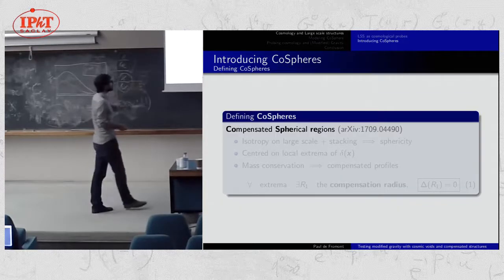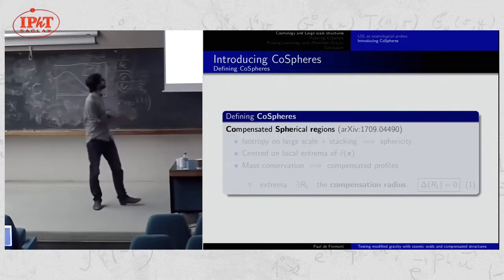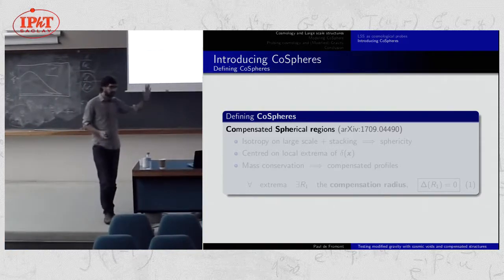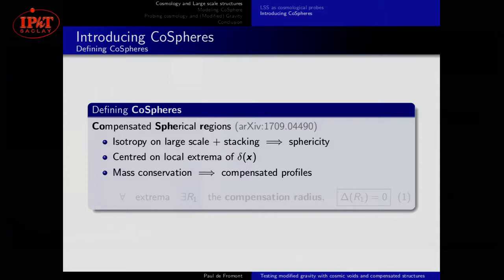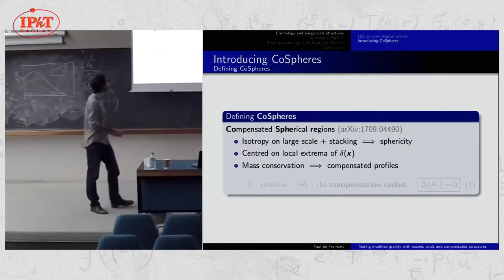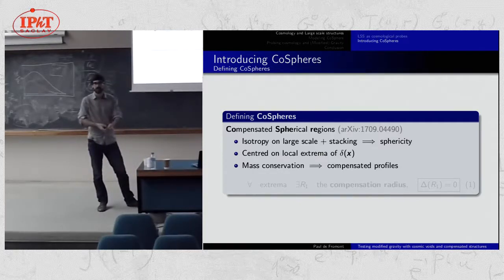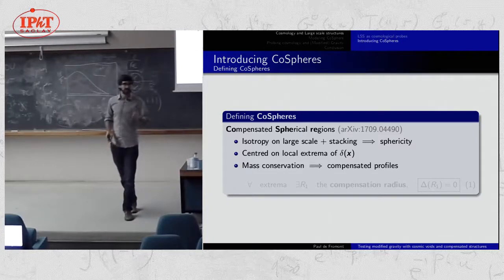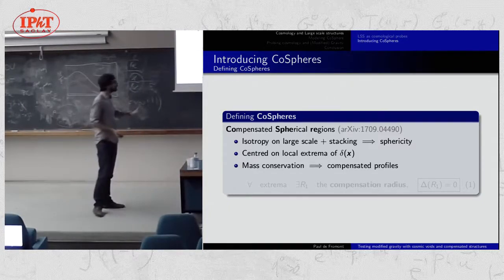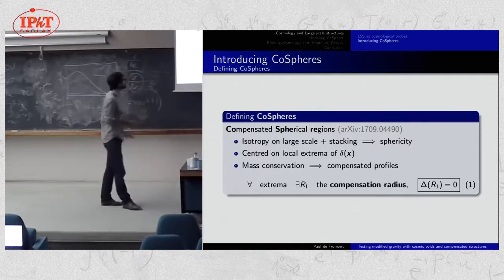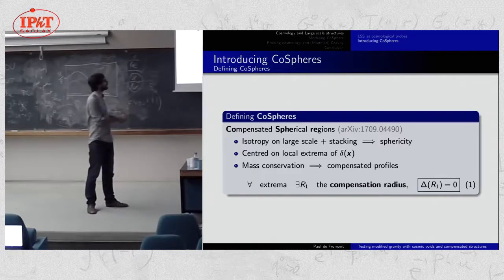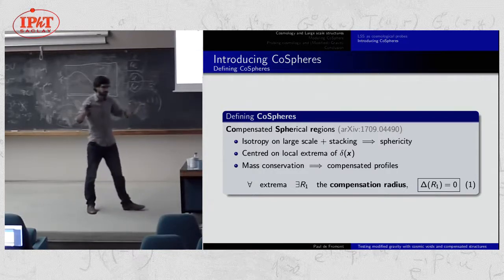The goal is to model these regions, which is why I introduce what I call CoSpheres — compensated spherical regions. This model is built to describe what I showed you. Since we consider isotropy on large scales and use a stacking procedure, I focus on spherical symmetry. By definition, CoSpheres are centered on extrema of the density field: a minimum seeds a cosmic void, a maximum seeds a halo. Due to mass conservation, every profile should be compensated — there exists a finite compensation radius for each extremum where the mass contrast vanishes.